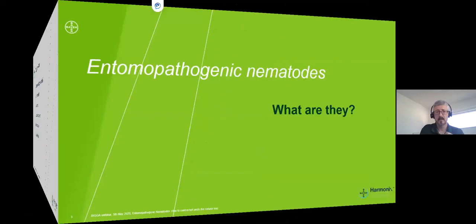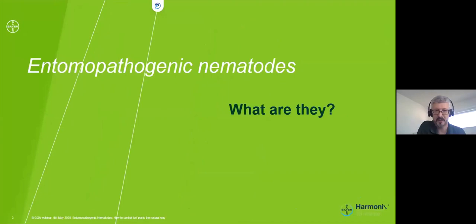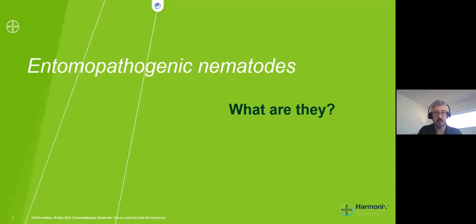Entomopathogenic nematodes — I shan't be saying that word too often today. First, I think we should distinguish the different types of nematodes we encounter in sports turf management. There are good ones and there are bad ones. Entomopathogenic nematodes are the good ones — they control pests of turf. The bad ones are the plant parasitic nematodes. These feed on the root system of your turf, causing the root system to deform, stress out the grass plant, and ultimately make your turf look quite ill.